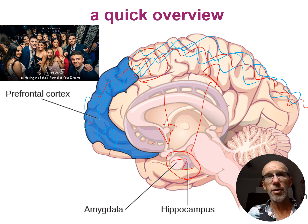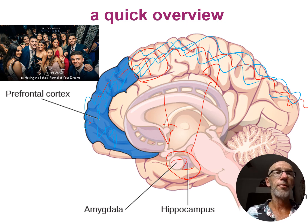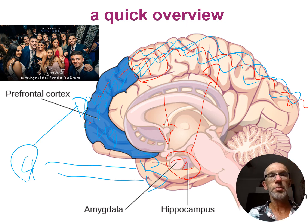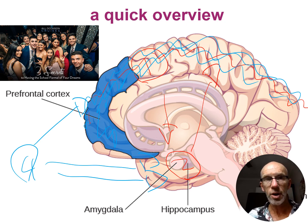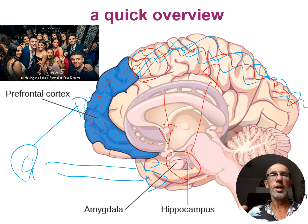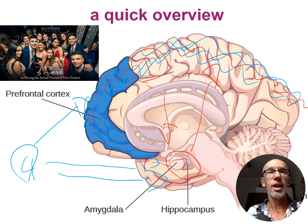Then later on when we want to retrieve or recall aspects of the formal, we go through the fourth stage. In terms of retrieval, all three structures are going to be involved. The neocortex is going to help bring all those integrated aspects of the memories together — the visual, the auditory, etc. The hippocampus is involved in giving that a contextual aspect, and the amygdala helps retrieve the emotionality of the formal.